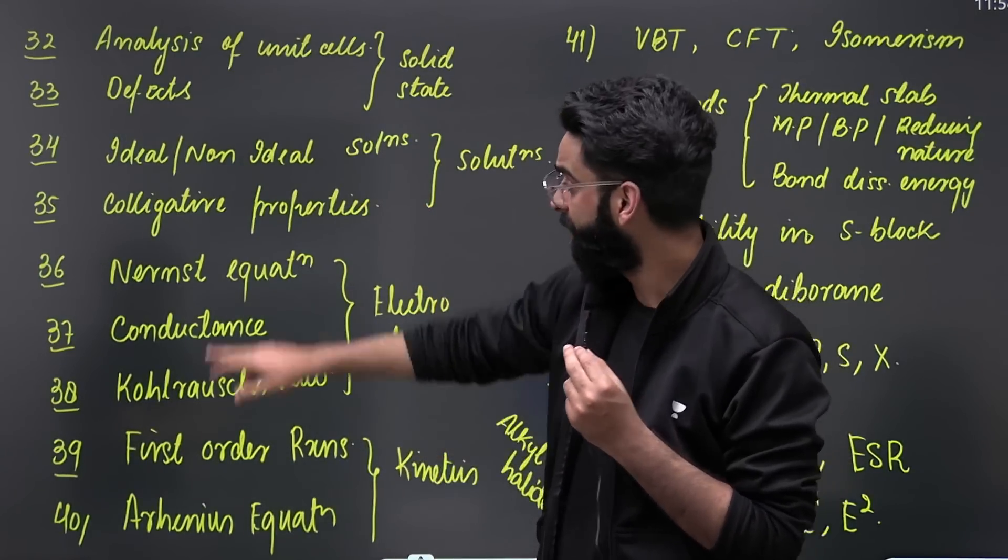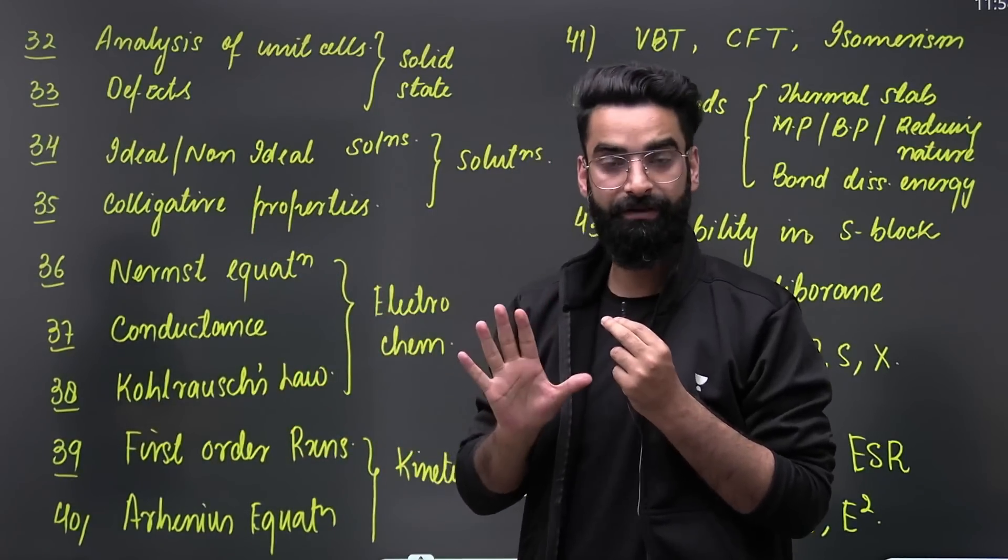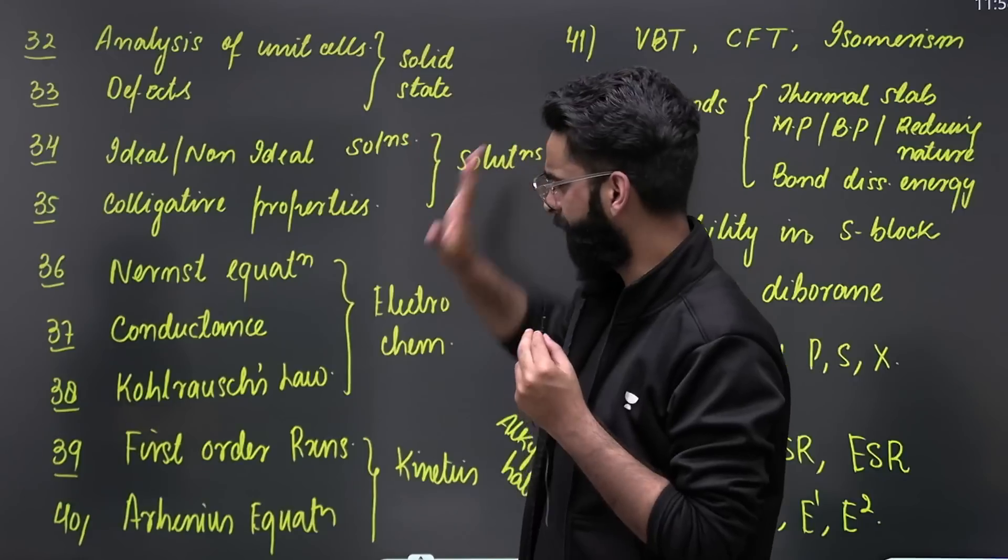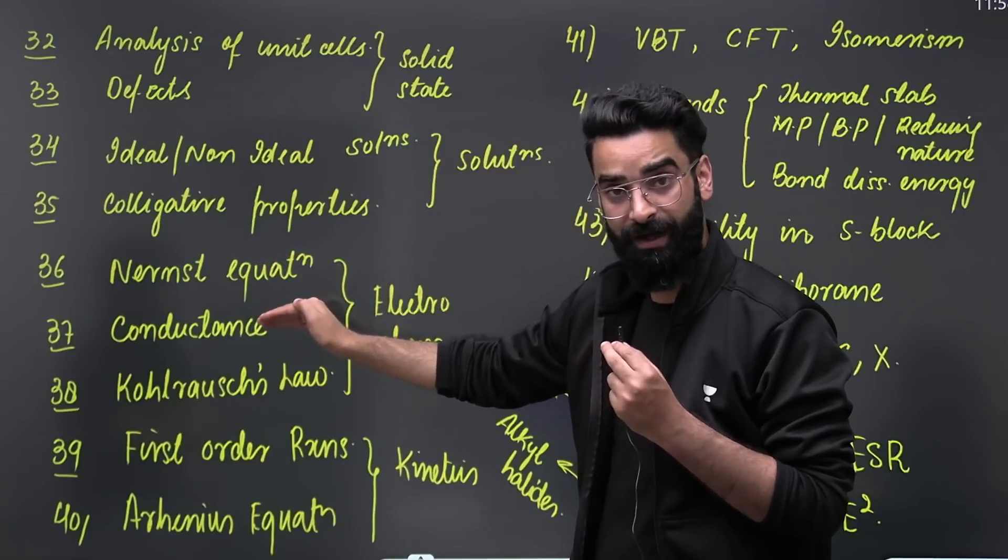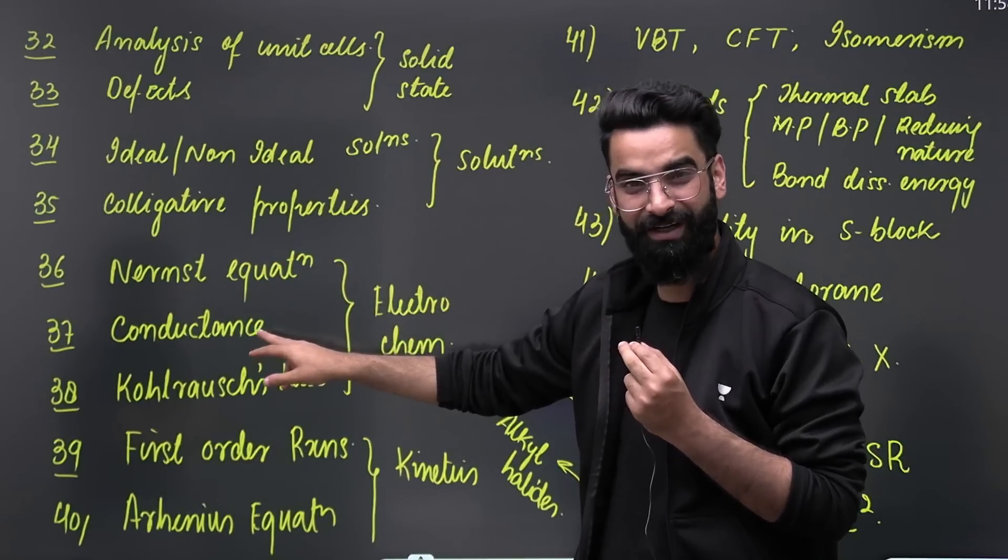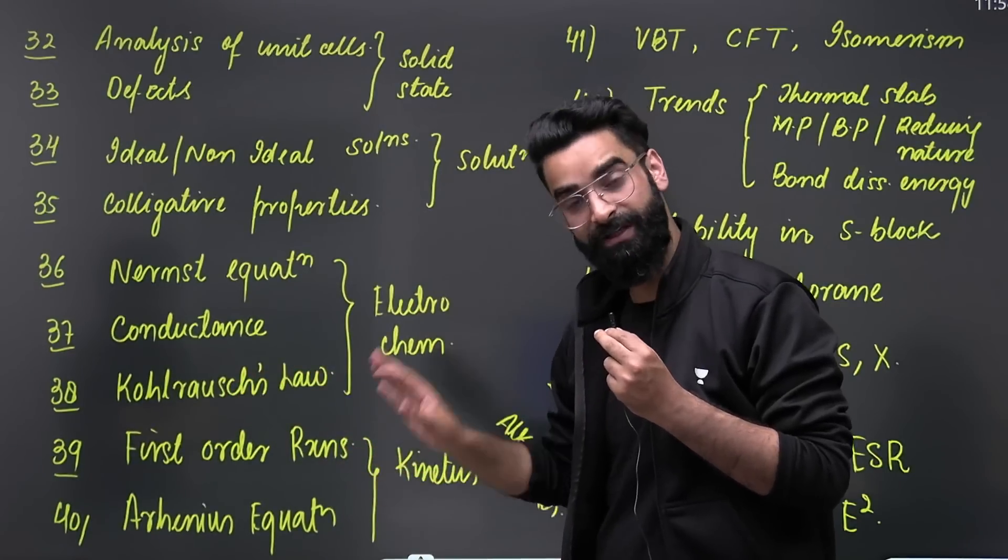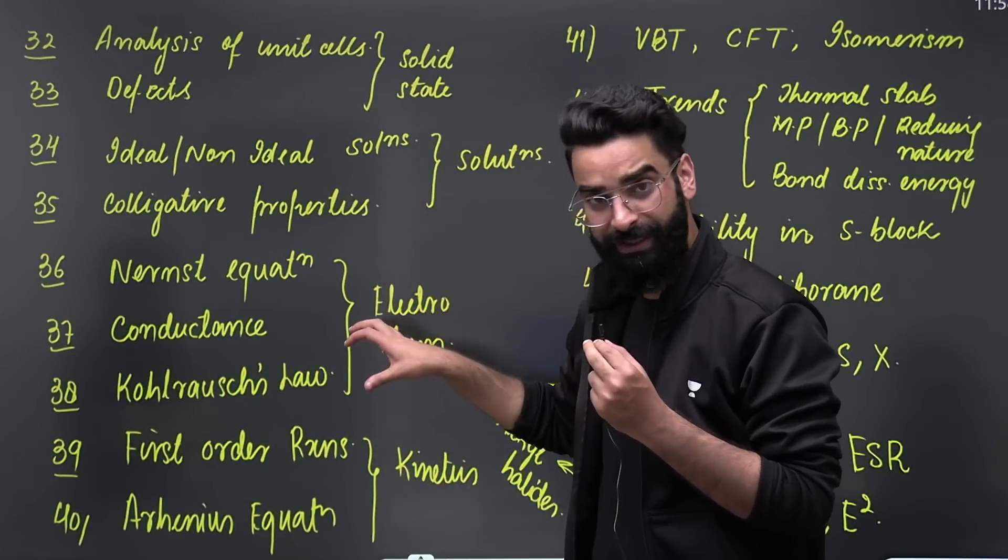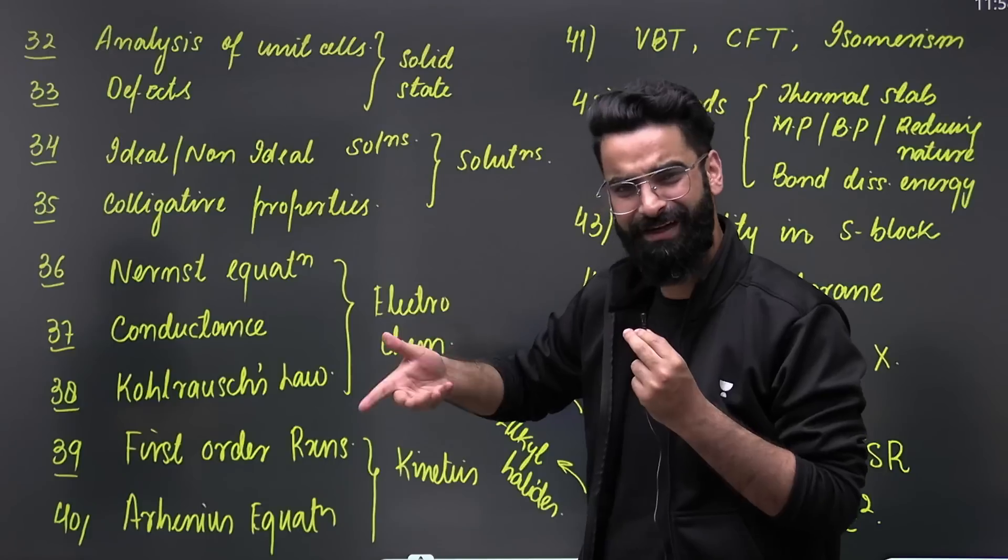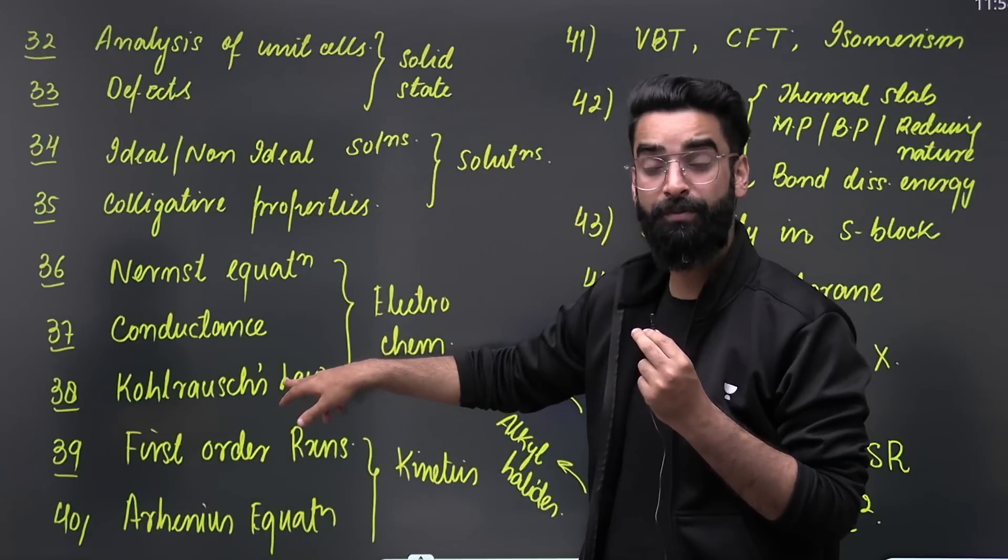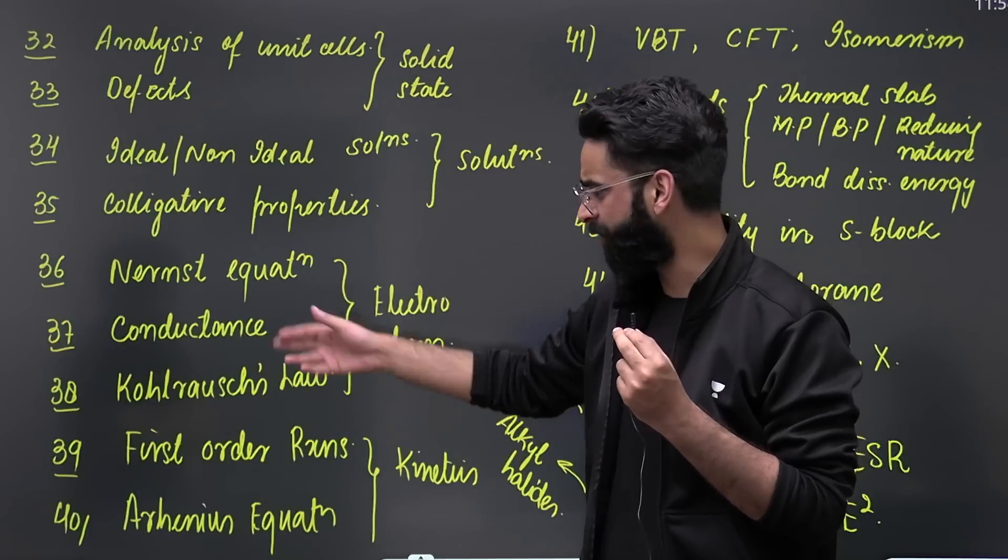In solution, you have got ideal and non-ideal solution - have a proper eye on that - and all the colligative properties are equally important including the van't Hoff factor and everything. In electrochemistry, you have got Nernst equation and conductance part, which involves your molar conductivity, equivalent conductivity, etc. Then you have got Kohlrausch law and its application. That's again one important topic. But in NEET 2023, do focus on Nernst equation more, because if you look at the last year NEET paper, two questions were asked from Kohlrausch law, so it's highly probable that this year the question is going to come from Nernst equation.